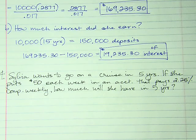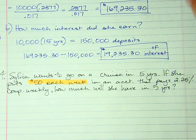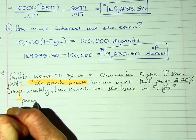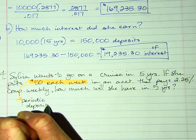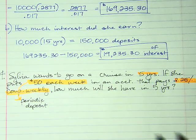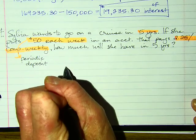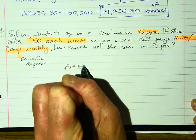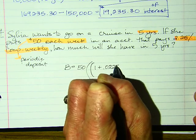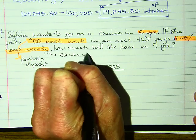She puts $50 a week, so this is a periodic deposit — she's doing it over and over again. We're looking at five years, 2.25% interest, compounded weekly. There are 52 weeks in a year, so n = 52.